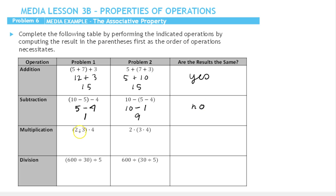For multiplication, 2 times 3 is 6. 6 times 4 is 24. Here we'll multiply the 3 times 4 first and 3 times 4 is 12. 2 times 12 is 24. So for multiplication, we did get the same results.